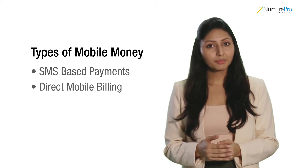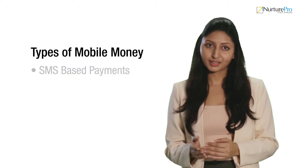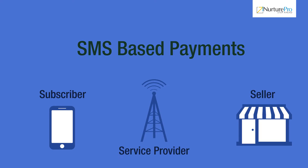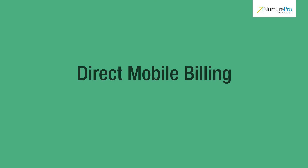Now let us see the different types of mobile money: SMS-based payments, direct mobile billing, and mobile web payments. In SMS-based payments, the subscriber sends a payment request to a short code number to make a purchase. The mobile service provider makes the payment on behalf of the subscriber, and the premium charge is levied to the subscriber's phone bill or mobile wallet. However, this method is not reliable as messages are sometimes lost in transit.